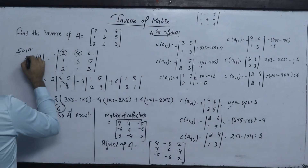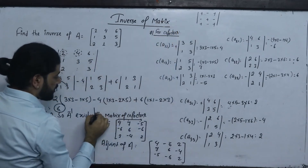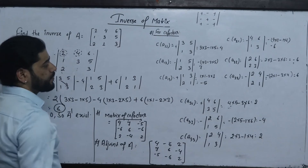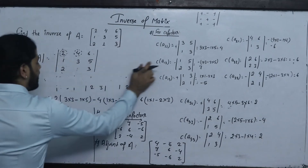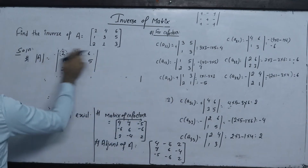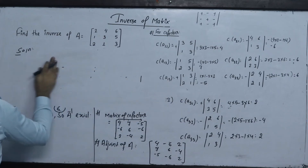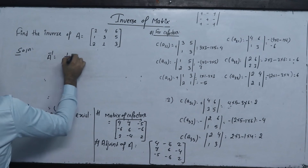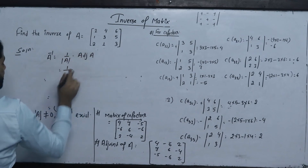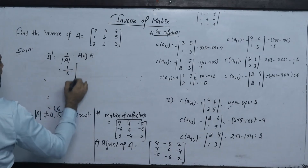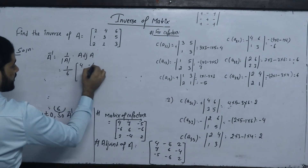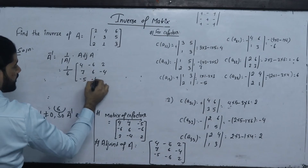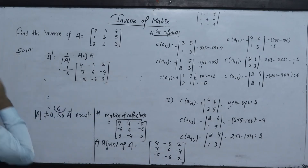The steps are: first step — find the determinant, second step — find cofactors, third step — find the adjoint. The formula for the inverse is: A inverse equals 1 upon determinant of A multiplied by adjoint of A. Determinant is 6, and the adjoint matrix is [4, minus 6, 2; 7, 6, minus 4; minus 5, minus 6, 2].